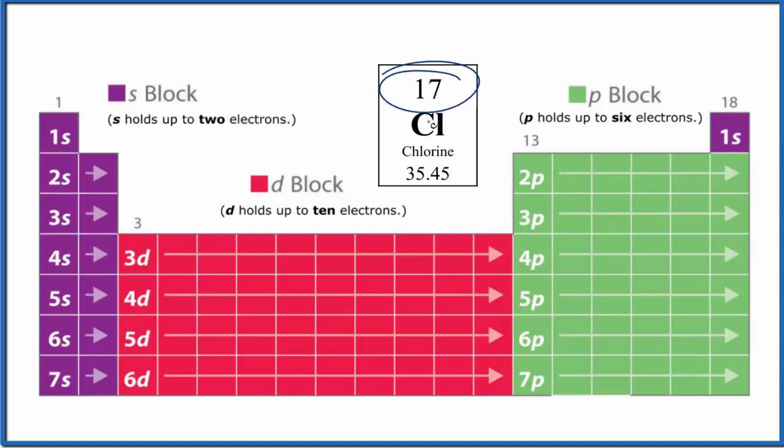Chlorine has an atomic number of 17, and that means it has 17 protons. Since it's neutral, like all of the elements on the periodic table, it also has 17 electrons. So that's what we're going to work with here.